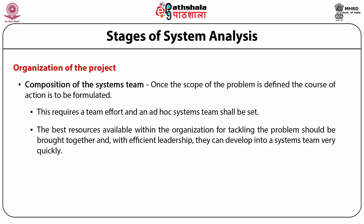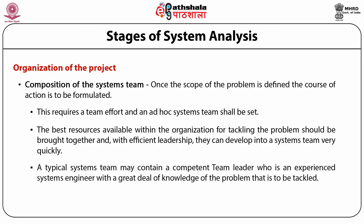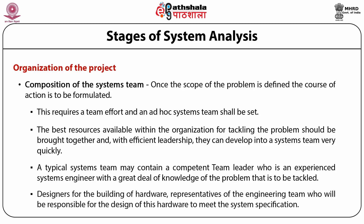The best resources available within the organization for tackling the problem should be brought together, and with efficient leadership they can develop into a system very quickly. A typical system team will contain: a competent team leader — an experienced system engineer with great knowledge of the problem to be tackled; a user who represents the team and shall operate the engineered system; system modeling experts who liaise with functional departments like research, process development, and sales; designers responsible for the hardware; and computer programmers involved with software development.